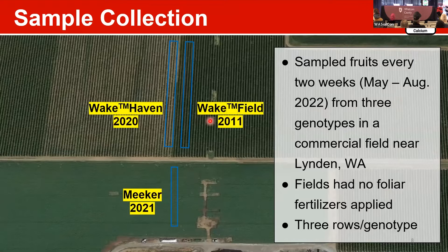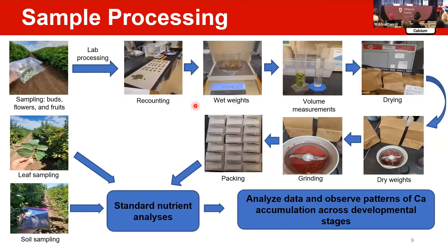These fields were planted in 2011 for Wakefield, 2020 for Wakehaven, and 2021 for Meeker, located in a commercial field near Linden. Importantly, the field had no foliar fertilizer application. We collected from three rows per genotype. After collecting samples in the field — buds and fruit — we brought them to the lab, ground them, packed them, and sent them for analysis. At the end of the season, we also collected leaf samples and soil samples for standard nutrient analysis, to compare and observe the pattern of calcium accumulation across development stages.